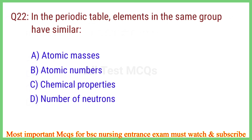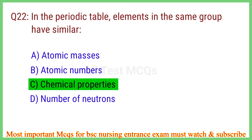Q22. In the periodic table, elements in the same group have similar? The right answer is option C: Chemical properties.